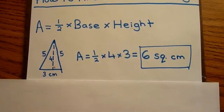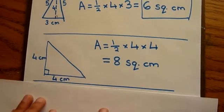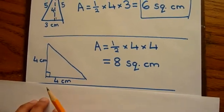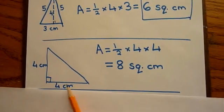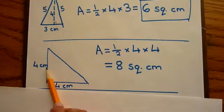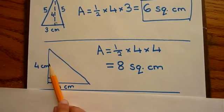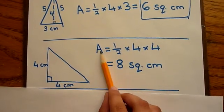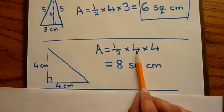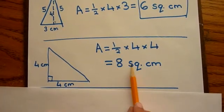Let's look at the next example. Here, the base is 4 centimeters. The height is 4 centimeters originally. You don't have to find any height in this example. So the area is half times 4 times 4. And that would be 8 square centimeters.